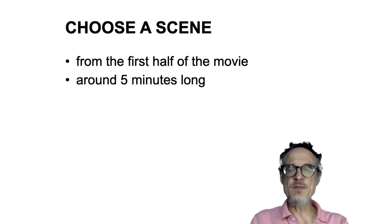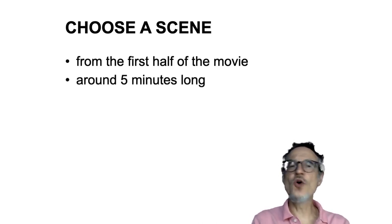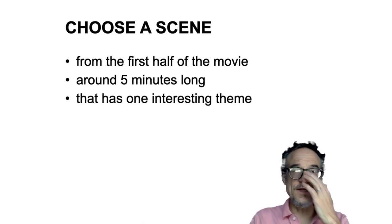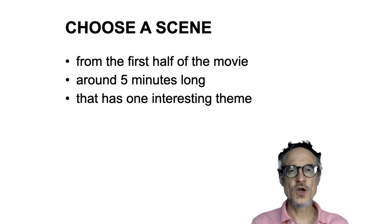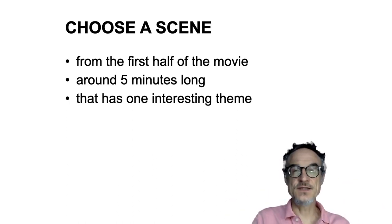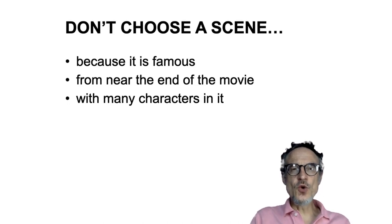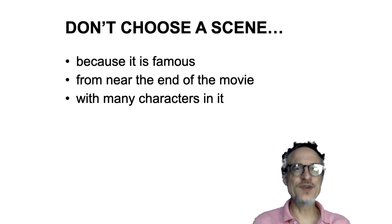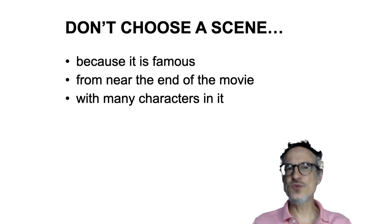The scene should be maybe around five minutes long. Longer than five minutes starts to get difficult to understand and difficult to follow. Try and find a scene that has one interesting theme, some kind of focus, some kind of topic, so that we can look at this topic — it will make it easier to think about. Don't choose a scene just because it's famous. If it's a famous scene, people have probably already seen it and we don't need to see it again.